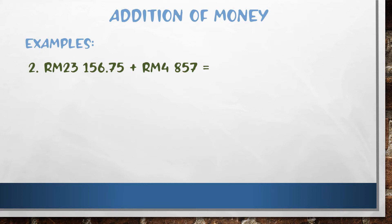Now we go to example two. Write it using the standard method first. This example includes sen — half a sen value — so we need to handle the decimal point.